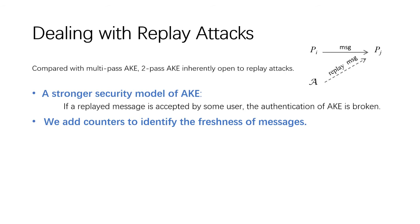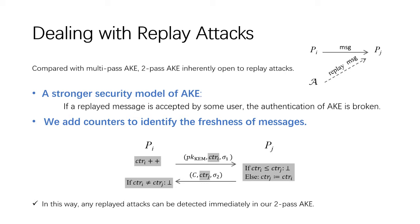Therefore, we introduce a stronger security model of AKE. In the stronger model, if a replayed message is accepted by some user, the authentication of AKE is broken. Meanwhile, we add counters to identify the freshness of the messages. As shown in this figure, each party maintains a local counter. Initiator Pi increases its counter CTR_i before it sends the message to Pj. Responder Pj recognizes the freshness of the message by checking whether CTR_i is greater than CTR'_i. To respond freshness, Pj will synchronize its counter CTR_j and send the response message back. Pi then checks whether CTR_j equals CTR'_j. In this way, any replay attacks can be detected immediately in our two-pass AKE.